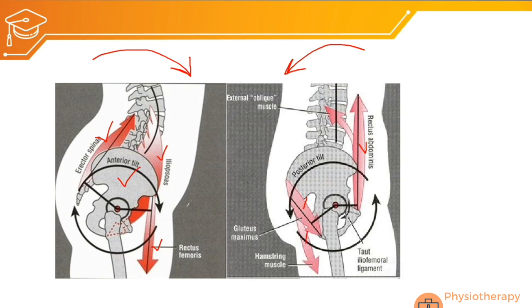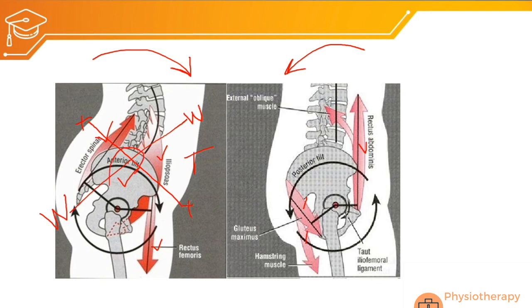Abnormal anterior pelvic tilt posture results from tightness of the iliopsoas, rectus femoris, and erector spinae, combined with weakness of the abdominal muscles (rectus abdominis, internal and external obliques) and weakness of the gluteal muscles. Drawing lines from tightness to tightness and weakness to weakness creates a cross pattern — this is called lower cross syndrome, where lumbar extensors and hip flexors are tight while abdominals and gluteals are weak.